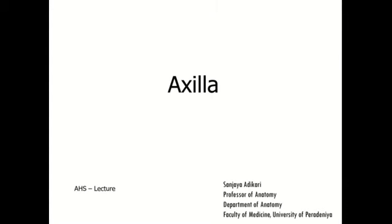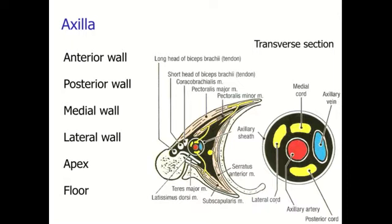The axilla has an anterior wall, posterior wall, medial and lateral walls, apex and a floor. Nerves and blood vessels passing from the root of the neck to the upper limb have to pass through the axilla.